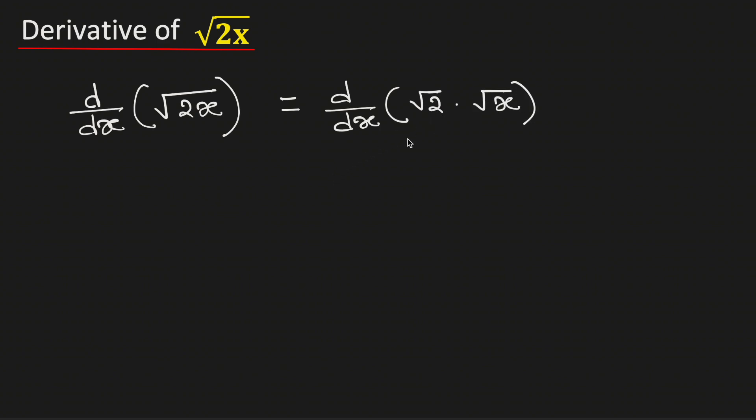Now see that square root of 2 is a constant so we can take it outside. So it can be written as root 2 times the derivative of square root of x with respect to x.